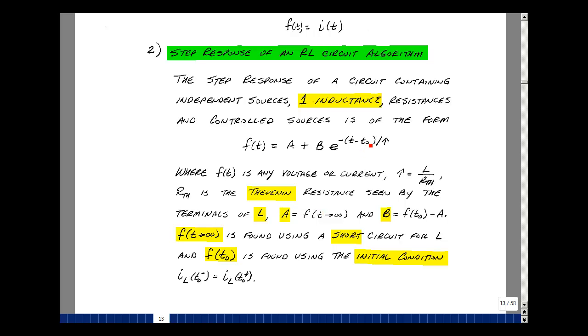Then when T is equal to T0, this becomes E to the zero, which is one, and we have A plus B. So then we can solve for B as the initial value of F minus the value of A. We're going to use the initial condition that the inductance current cannot jump instantaneously and use that to find whatever the variable F(t) is at T equals T0. This is how we're going to solve RL switching circuits.